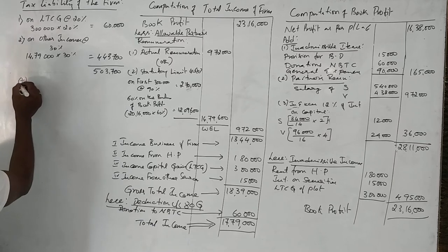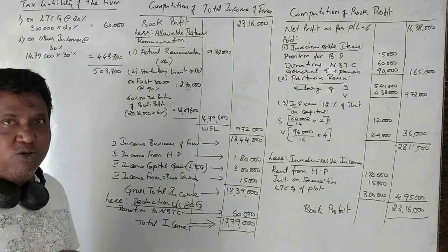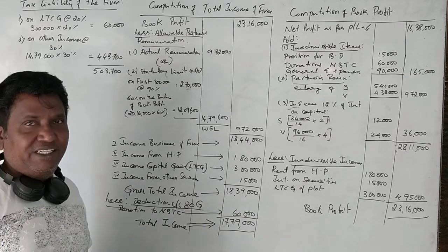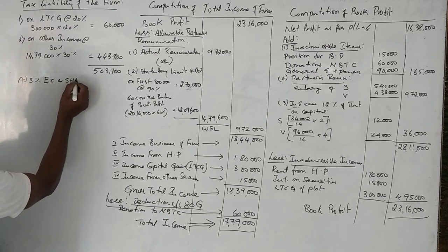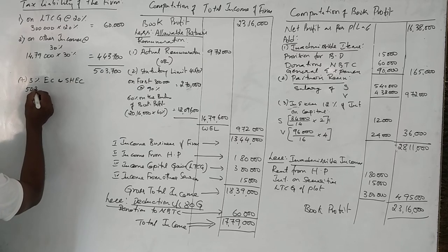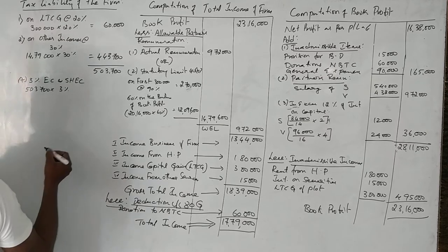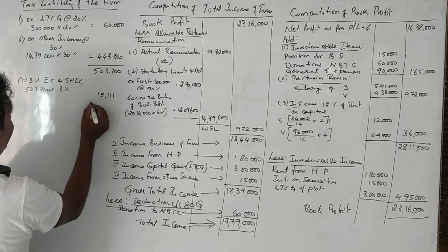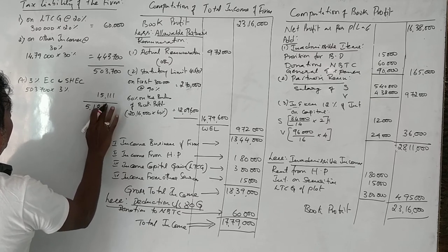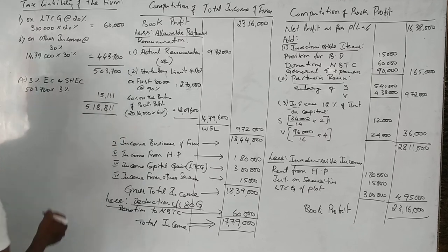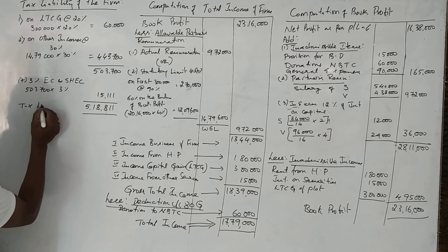Since total income is less than ₹1 crore, no surcharge applies. We add Education Cess and Secondary & Higher Education Cess at 3% on ₹5,03,700, which comes to ₹15,111. Total tax liability of the firm is ₹5,18,811.